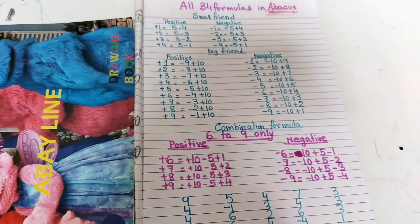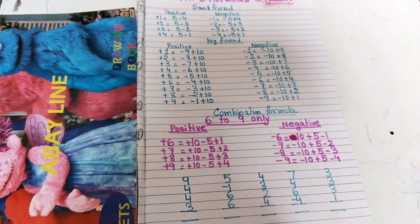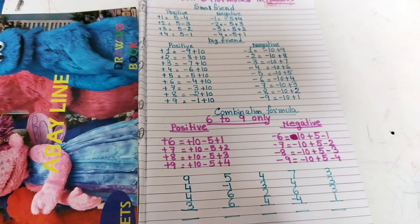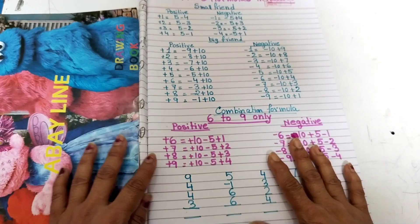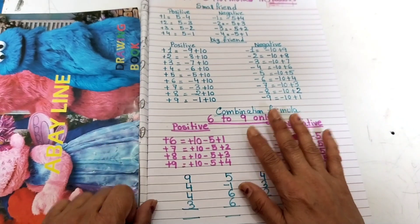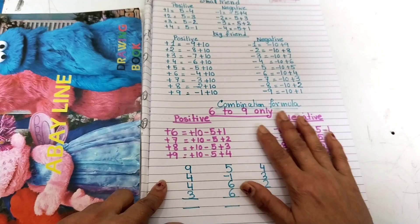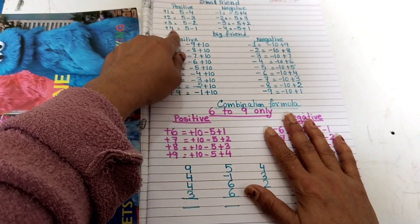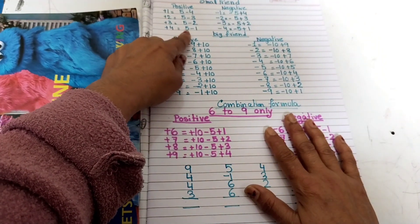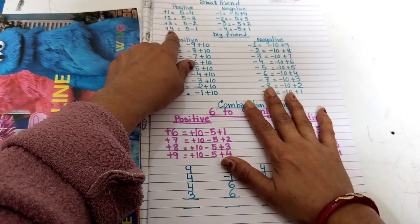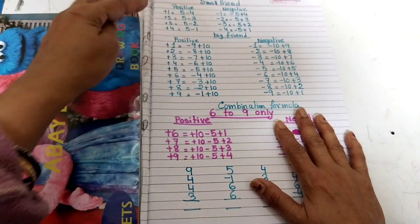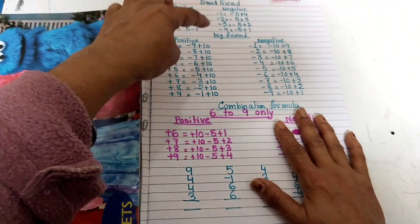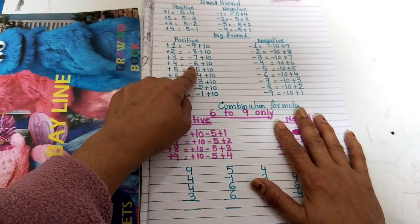Now let me show five calculations. First: 9 plus 4 plus 4 plus 4 plus 3. Starting with 9 using finger counting. For plus 4, I don't have any finger available, so I try the small friend formula: 5 minus 1. But 5 is already up, so I go to the big friend formula instead, since if the small friend formula is not working, I go to the big friend.